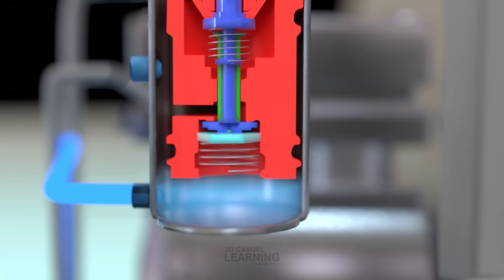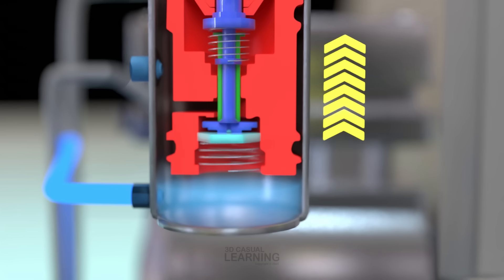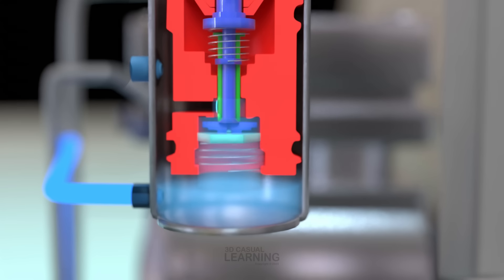When the pressure reaches the governor's cut-out setting, typically around 120 psi, the piston moves far enough to close the exhaust valve and open the inlet valve. At this point, reservoir air flows through a passage inside the piston and exits via the governor's unloader port, heading straight to the compressor's unloader mechanism. This air pressure activates the unloader pistons inside the compressor, forcing the inlet valves to stay open, and as a result, air compression stops.